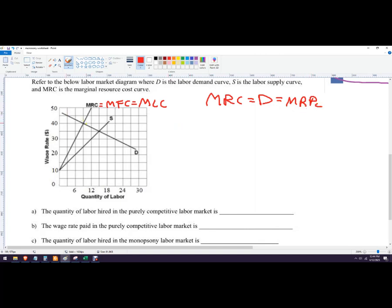So we're going to go down here. It hits right there. That's where they equal. And that gives us a quantity halfway between 6 and 12 is 9. So that's not purely competitive. That's the monopsony. So the monopsony answer is right here.